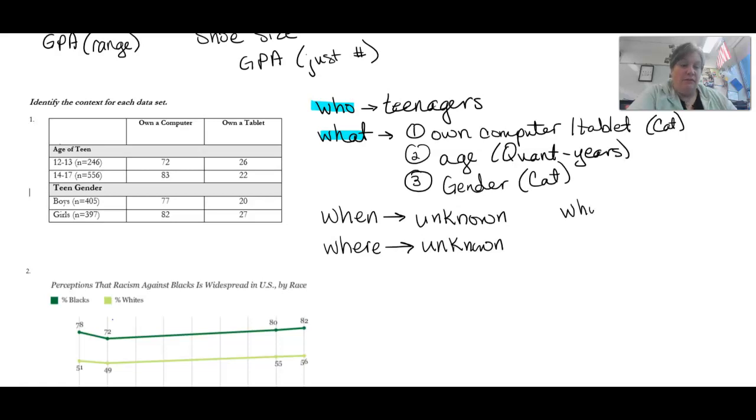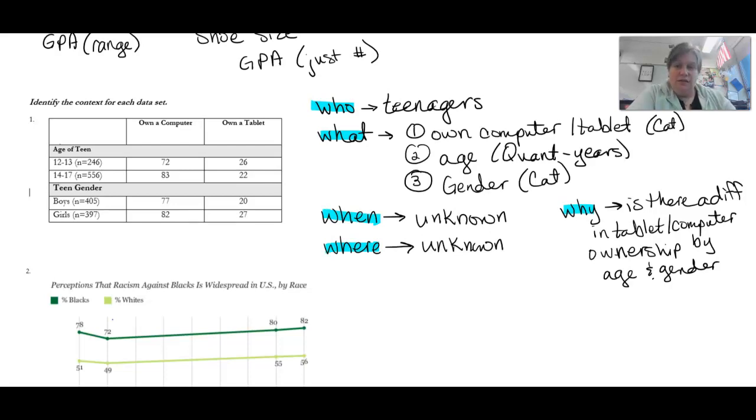Okay. Why you can find out. So, the why. Why would you collect a survey like this? Well, you're trying to see if is there a difference in tablet or computer ownership by age and gender. That's what they're doing. They're looking for that. I should highlight these two. So, who, what, when, where, why. And then the how. I'm going to kind of squeeze this over here. The only way you can really find out this stuff is they probably had to do some kind of survey. Sometimes it's going to be specific, but sometimes you won't know. But something like this, these are things that you would ask people. You're not doing an experiment. You're asking people these questions.